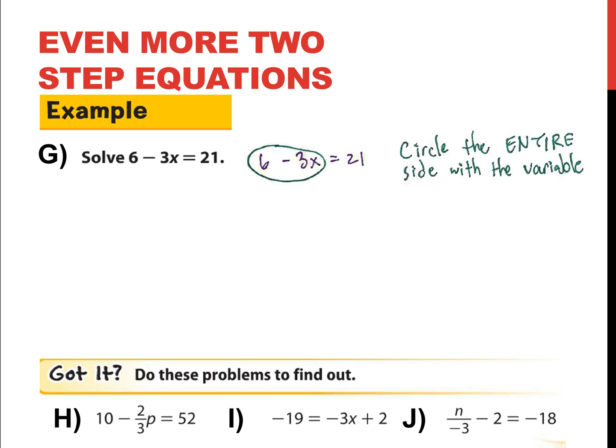And of course, when I'm focusing on that 6, it is positive 6. So the inverse of a positive is a negative number. So I subtract 6 from each side. That leaves me with negative 3x is equal to 15.